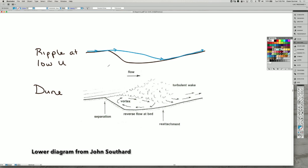So now I'd like to talk a little bit about the difference of flow across a ripple, particularly at the lower flow speed end versus what's more common at a dune.